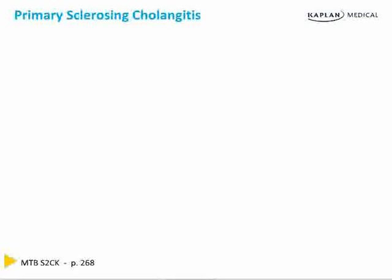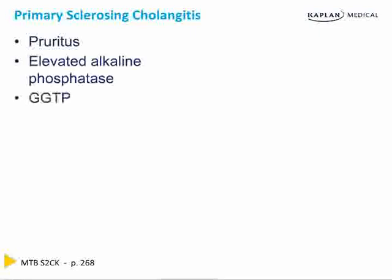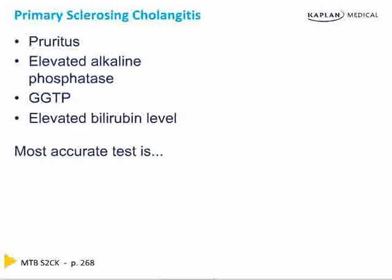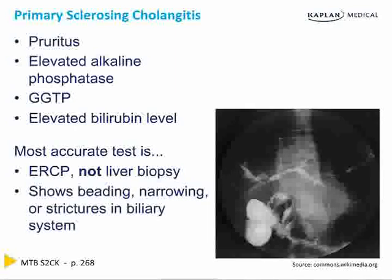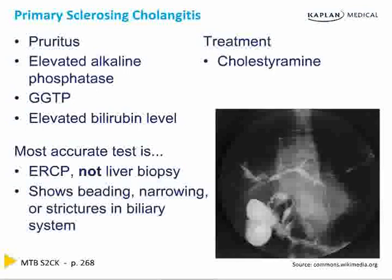Primary sclerosing cholangitis is an autoimmune condition that presents with pruritus, elevated alkaline phosphatase, elevations in GGTP, and elevated bilirubin. The most accurate test is an ERCP, not a liver biopsy — it will show beading, narrowing, or strictures in the biliary system as seen on the cholangiogram. Treatment is with cholestyramine and ursodeoxycholic acid.